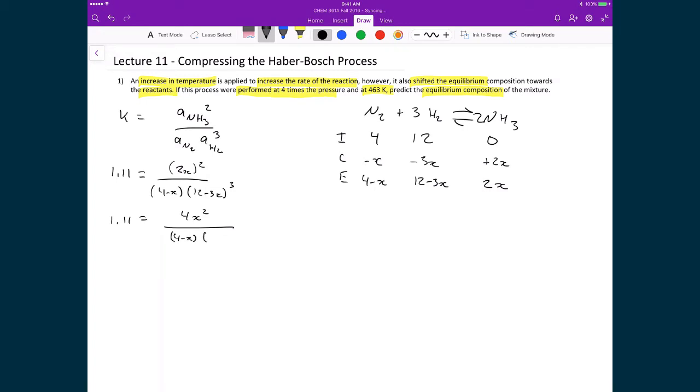Here because I've got 12 minus 3, I can factor out 3 and then raise to the power of 3. I've got 3 times 3 times 3 gives me 27 on the bottom. And then 12 divided by 3 is 4. 3 divided by 3 is 1. So I get 4 minus x raised to the power of 3.